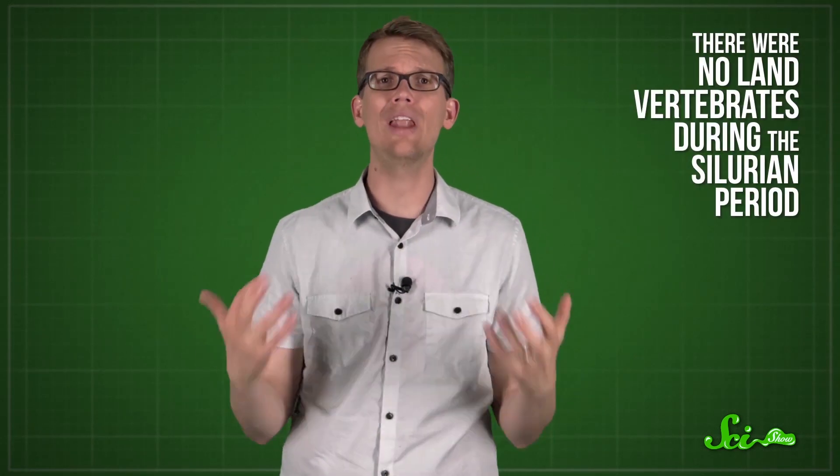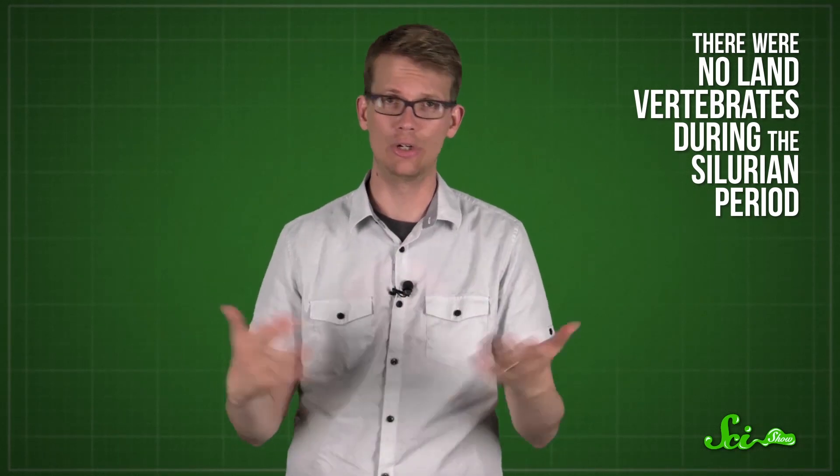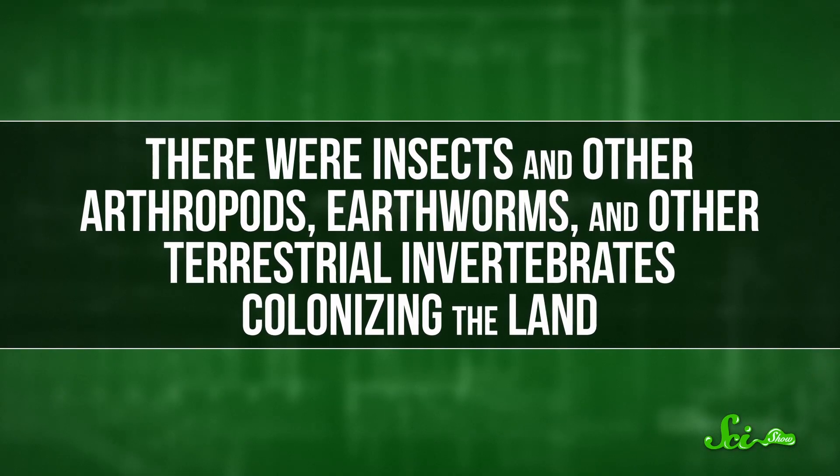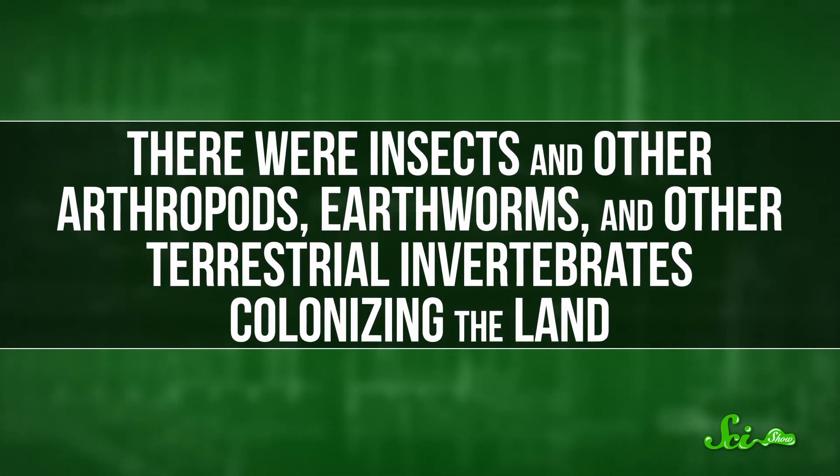Now, there are Doctor Who creatures called Silurians, but they are pretty badly named because there were no land vertebrates during the Silurian period, let alone intelligent humanoid reptiles. But there were insects, and other arthropods, earthworms, and other terrestrial invertebrates colonizing the land. They formed the first simple land ecosystems, along with plants and fungi.